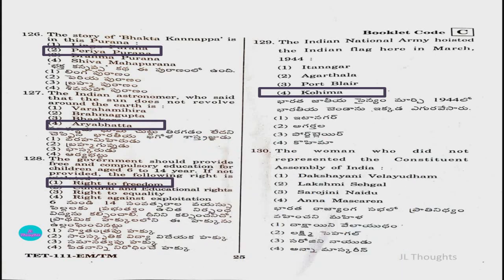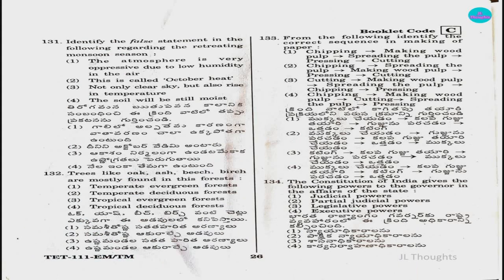Question number 130: The woman who did not represent the Constituent Assembly of India is — option 1: Dakshayini Velayudham; option 2: Lakshmi Sahagal; option 3: Sarojini Naidu; option 4: Anna Mascarene. The answer is option two, Lakshmi Sahagal.